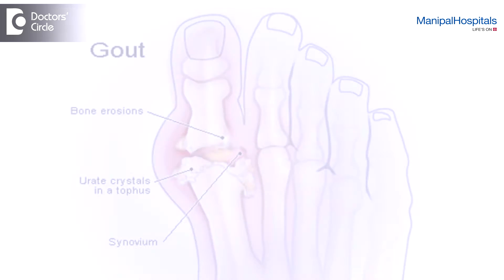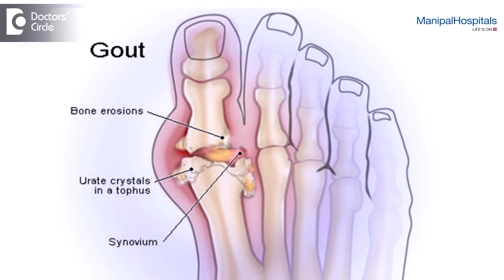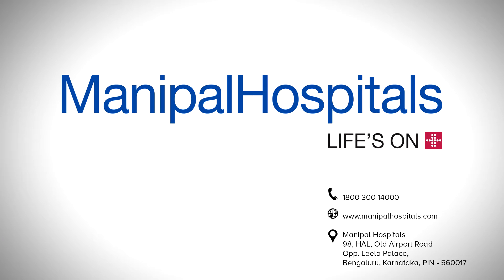In crystal arthritis, there is deposition of crystals in the joints which cause inflammation. Gout and pseudo-gout are some of the examples. Thank you, folks.